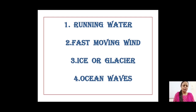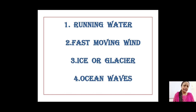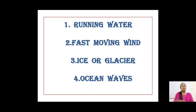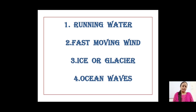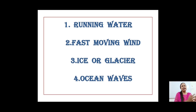The fourth and last agent is ocean waves, which are active in coastal areas. In coastal areas, rocks are broken into smaller pieces mainly due to ocean waves, and these particles are further carried away by the waves. All four agents — running water, wind, ice, and ocean waves — are agents of both weathering and erosion: first breaking rocks into smaller pieces, then carrying those pieces from one place to another.